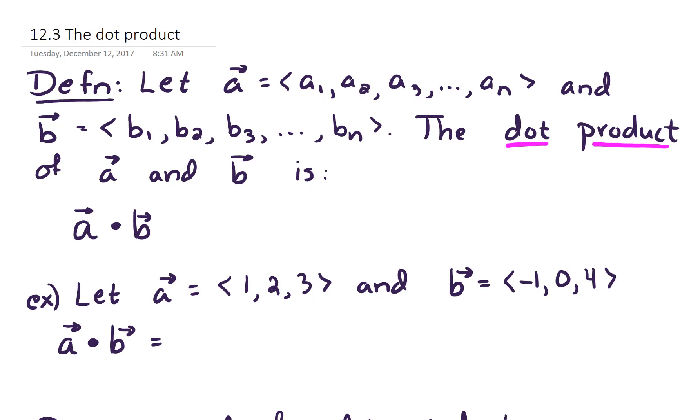A dot b equals a1 times b1, so that's just scalar multiplication, plus a2 times b2, plus a3 times b3, all the way up through the nth component, a sub n times b sub n. So there is our dot product defined.